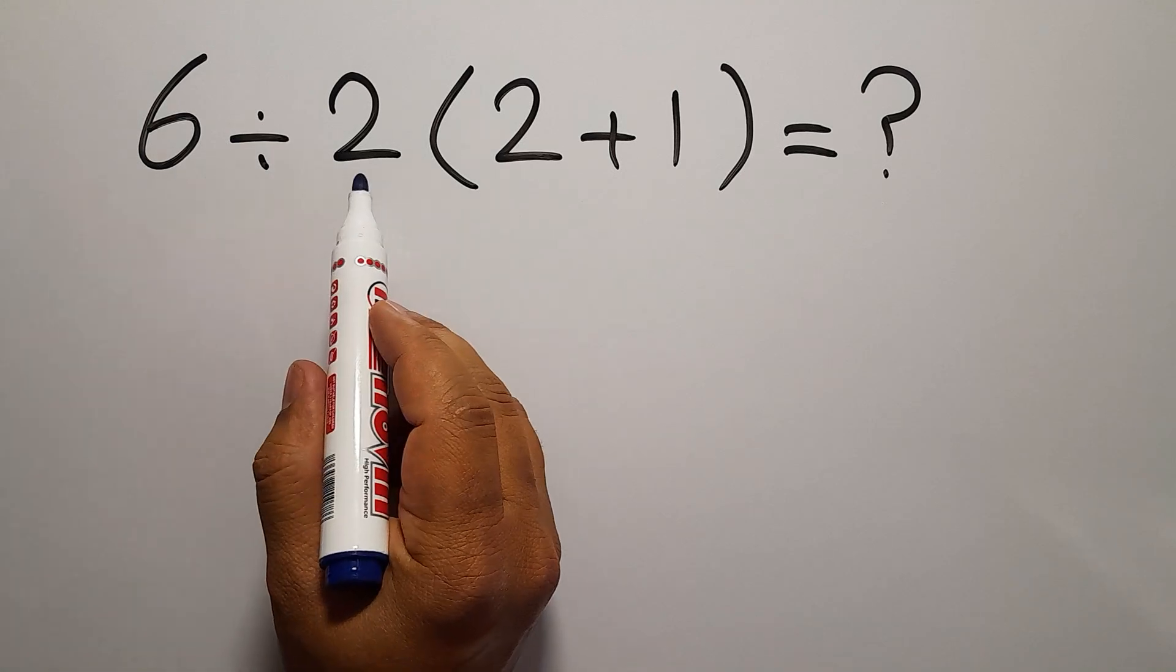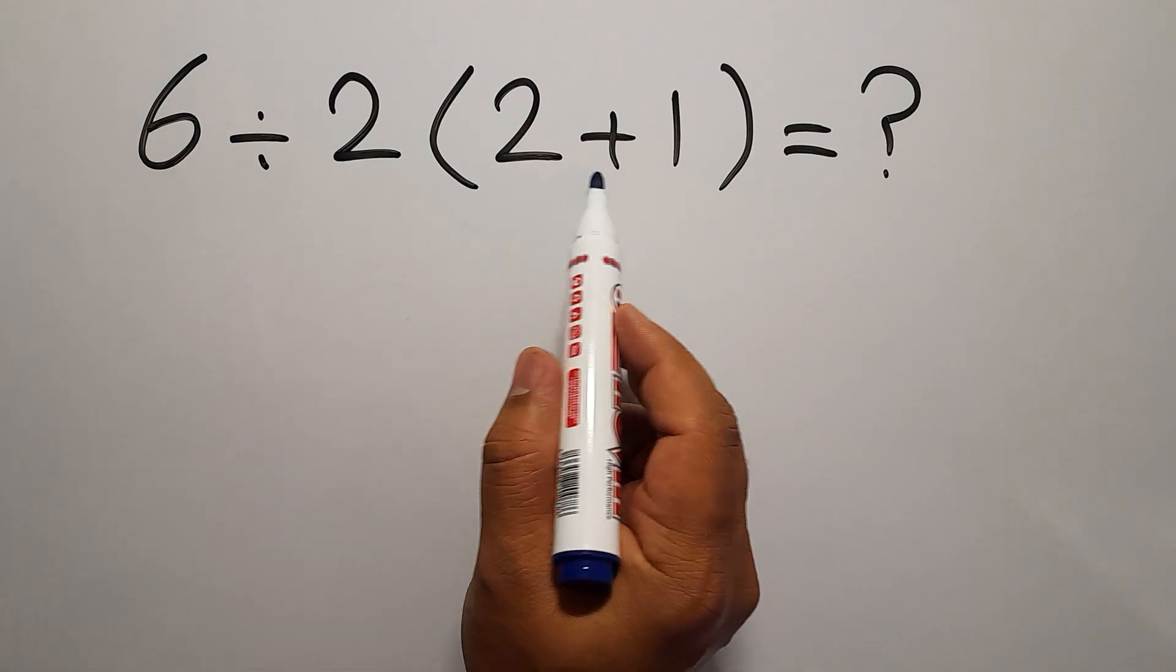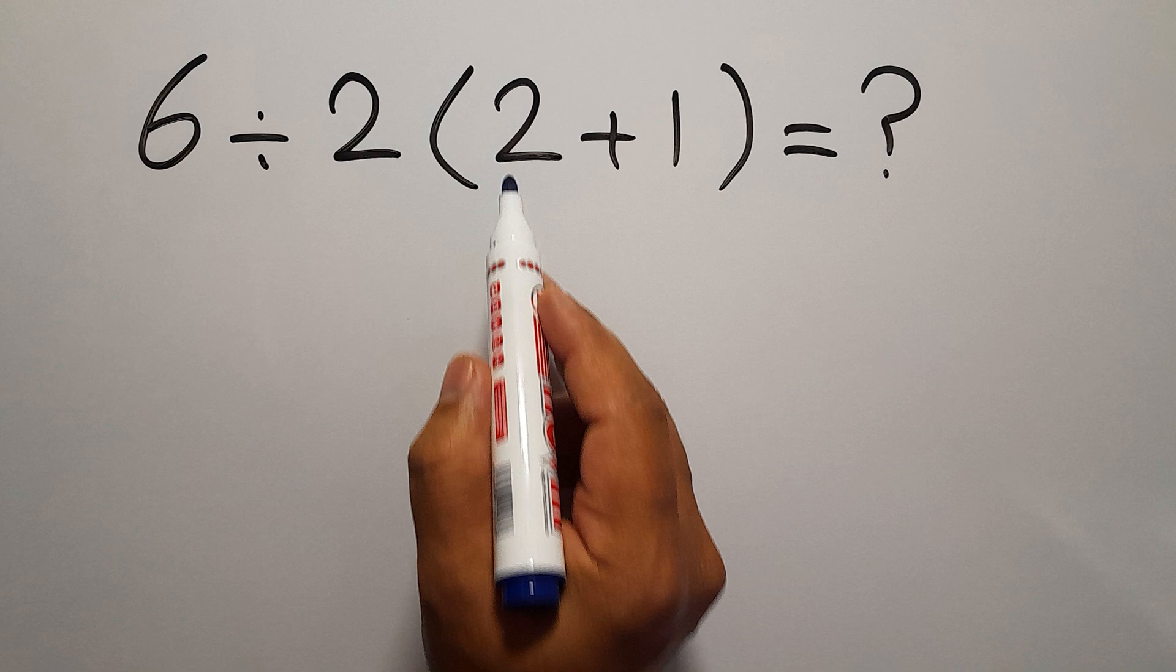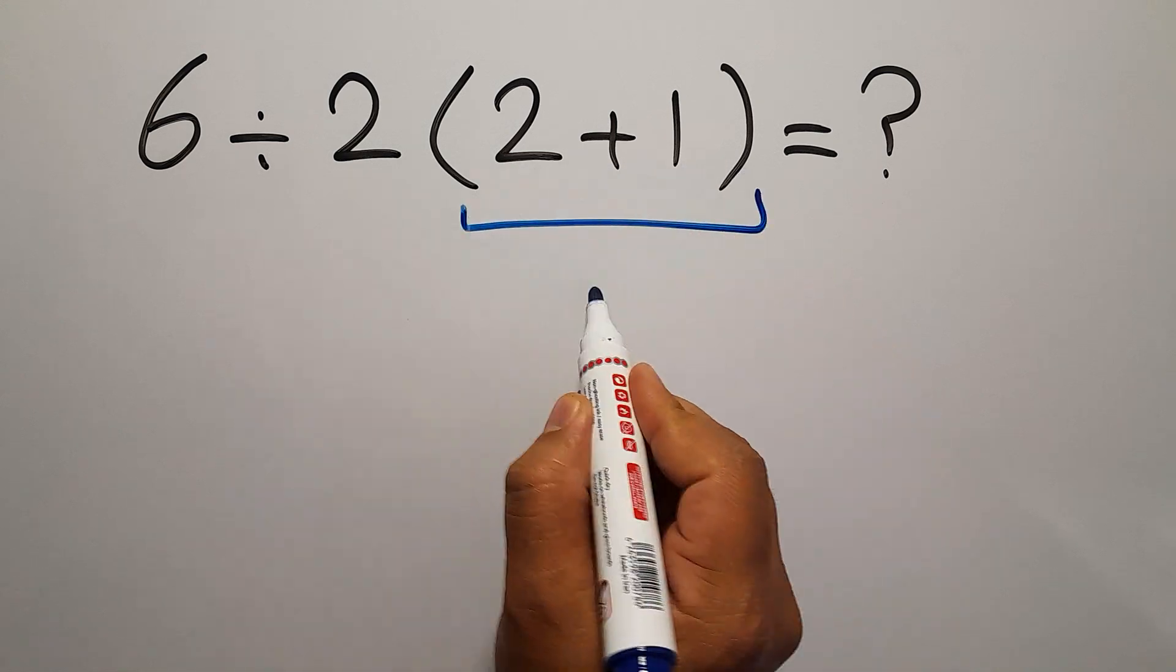6 divided by 2, then times 2 plus 1. 2 plus 1 gives us 3.